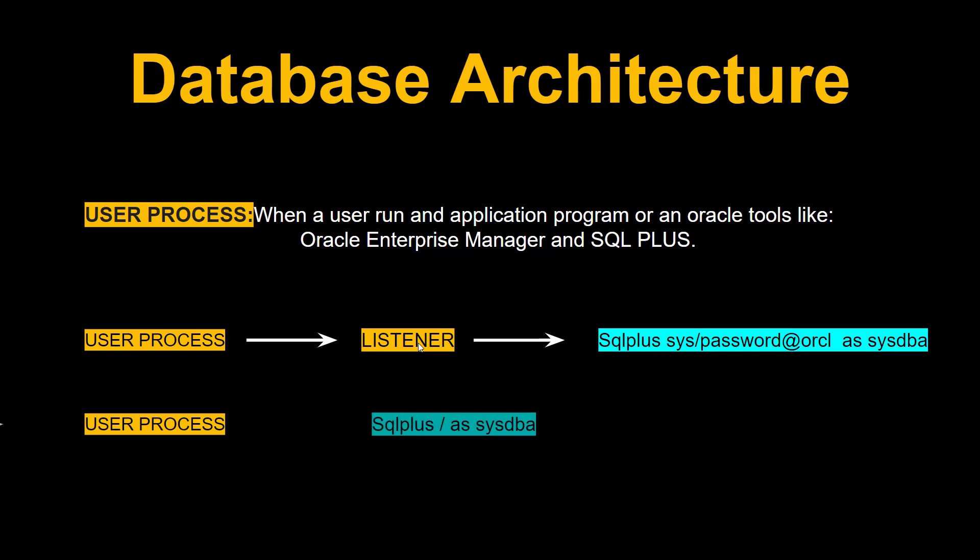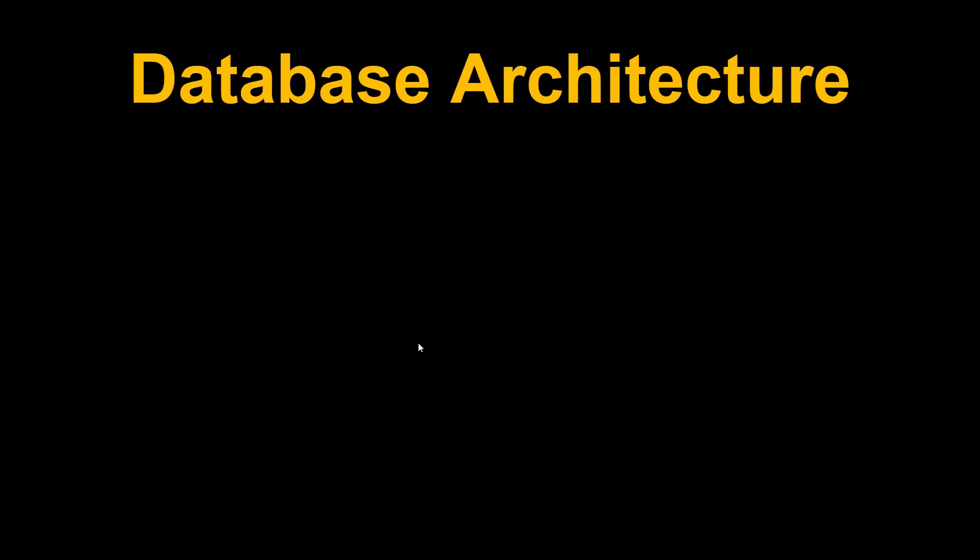The user process is connected with the database. Sometimes we use the following command to establish a database connection without specifying any username and password. This is the default connection, which connects with the SYS user — the super user of the Oracle database.